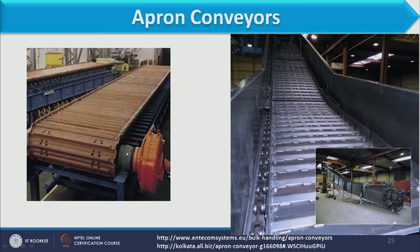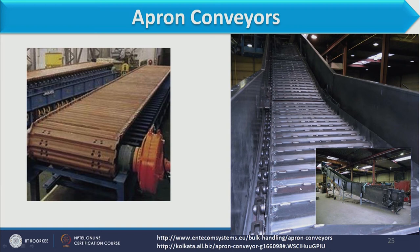Images of apron conveyors show metal sheets connected with each other and moved by a drive. The first image shows an apron conveyor without side walls. The second image shows an inclined apron conveyor with side walls, where the side walls are static while the apron moves. Corrugated aprons prevent material displacement due to the corrugations.